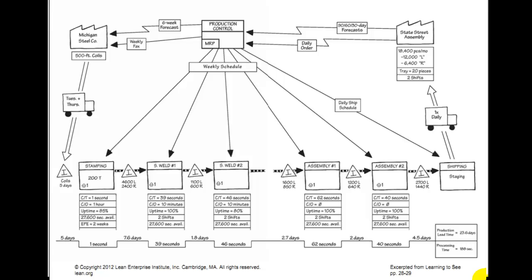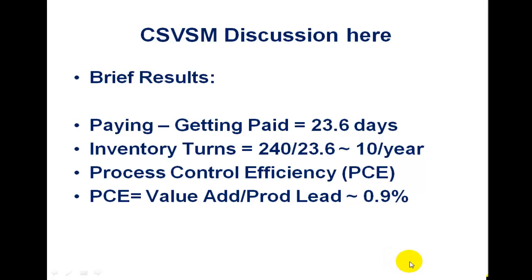Any questions on that? You've got to know where you're starting before you can ever have a chance to improve it. Production lead time is 23.6 days; inventory turns about 10 a year; process control efficiency about 0.9% — meaning 99% of the time, whatever you do around this stuff is waste. The customer doesn't want to pay for it. Not a real flattering picture, but it's not unusual — trust me, in my experience, it's not unusual.